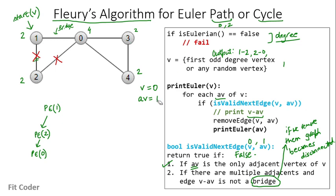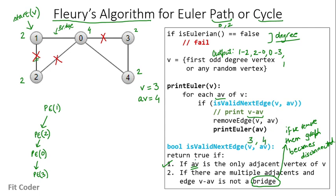With av=3, we check isValidNextEdge(0,3). It is not the only adjacent vertex, and removing edge (0,3) does not disconnect the graph because we can still reach 3 via 4. So this is a valid next edge and returns true. We print 0→3, remove this edge, and call printEuler for vertex 3. Now v=3 and its only remaining adjacent vertex is 4. av=4, and since this is the only adjacent vertex of 3, isValidNextEdge returns true. We print 3→4, remove this edge, and call printEuler for vertex 4.